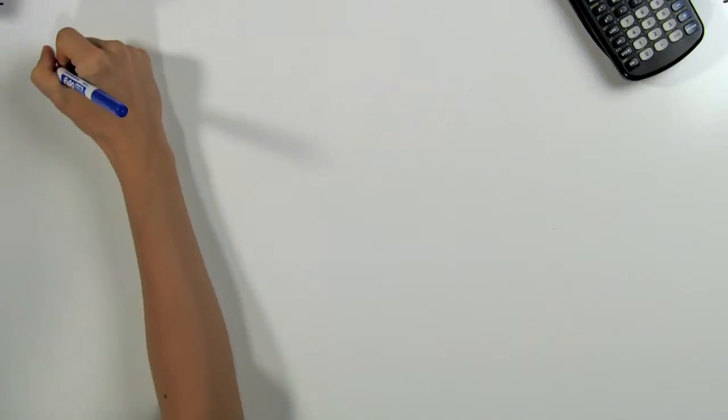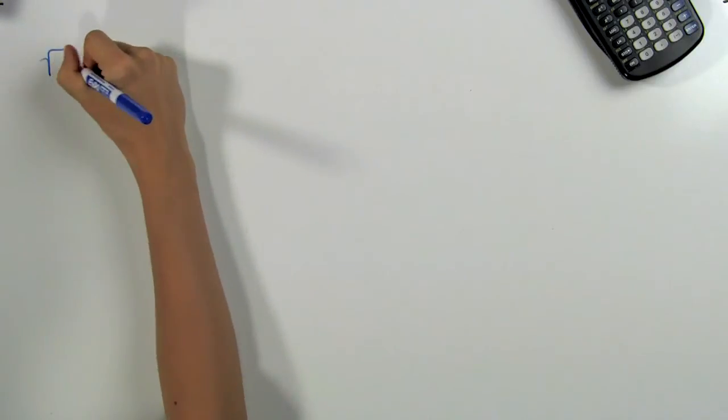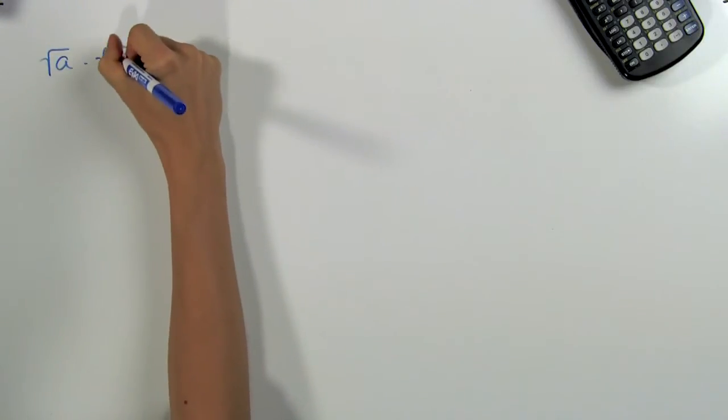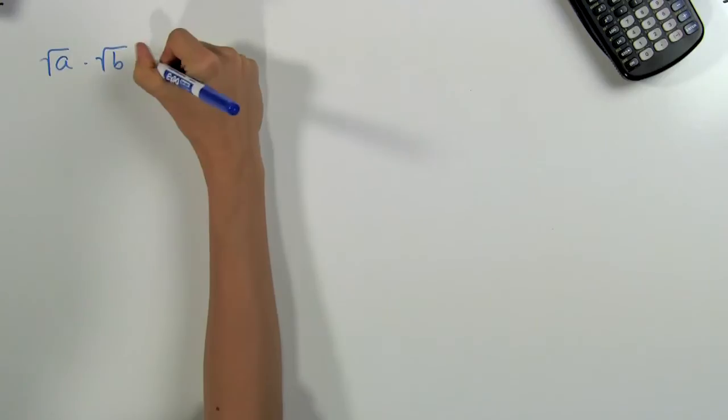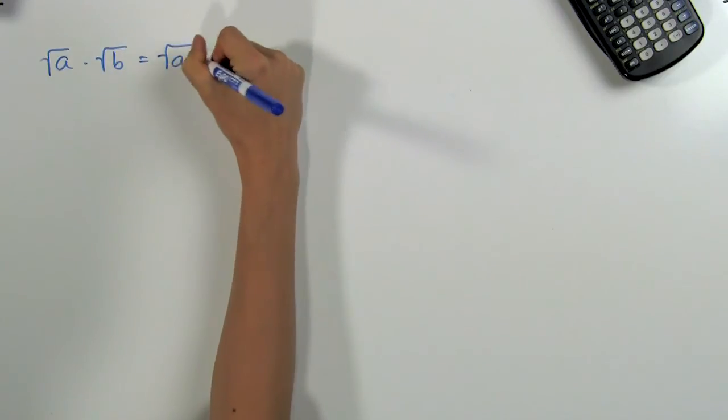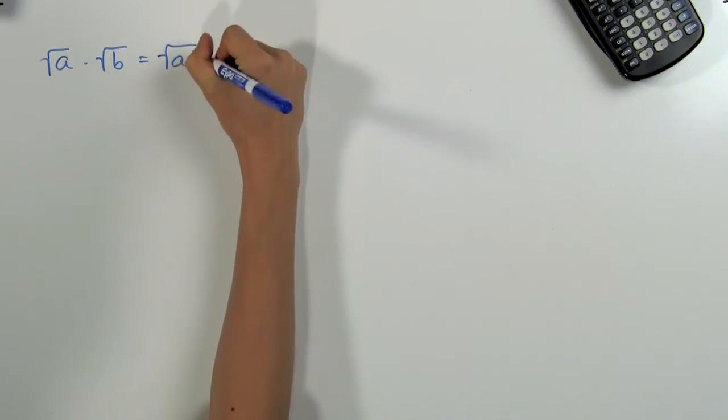First, let's look at our two basic properties for distributing. The first one says that the square root of a times the square root of b is equal to the square root of a times b.